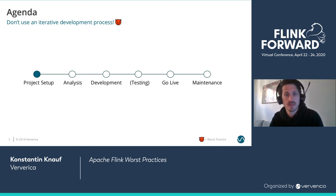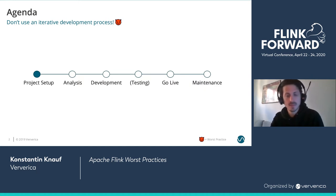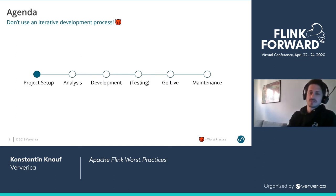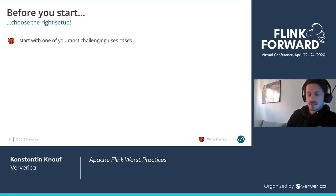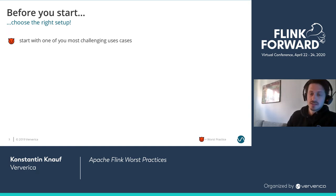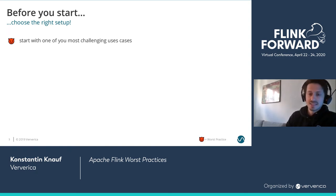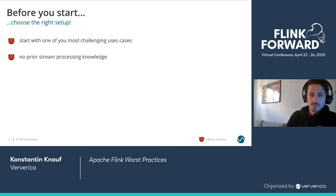We'll start with project setup, then analysis, then development. If we have time, we'll do some testing. There's go-live and there's maintenance. The first thing you want to make sure when starting your first Flink project is that it's a really business-critical use case with lots of management attention and very high SLAs. When it comes to the team: no prior knowledge, obviously — no stream processing knowledge, maybe also no Java, no distributed systems knowledge at all. It's a challenging mix.